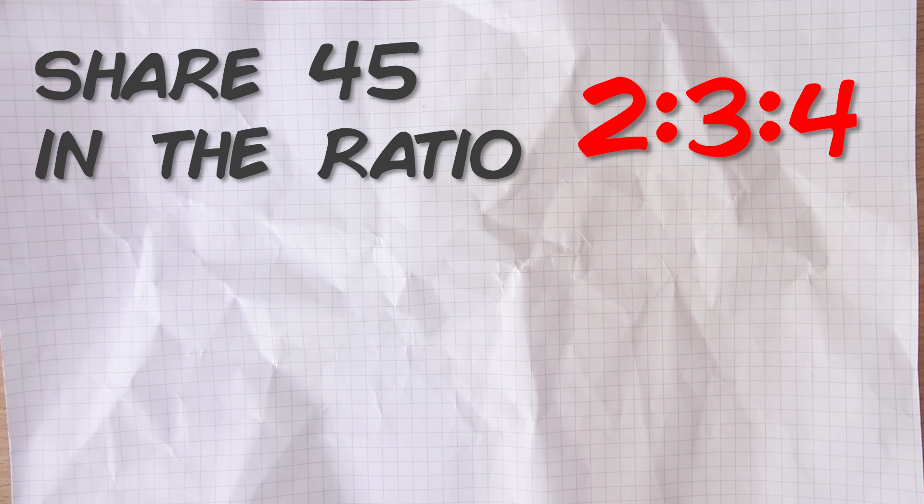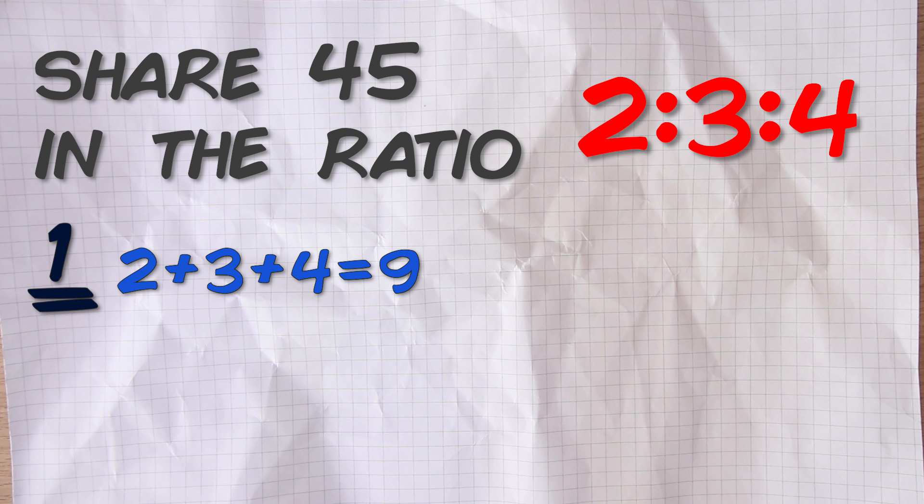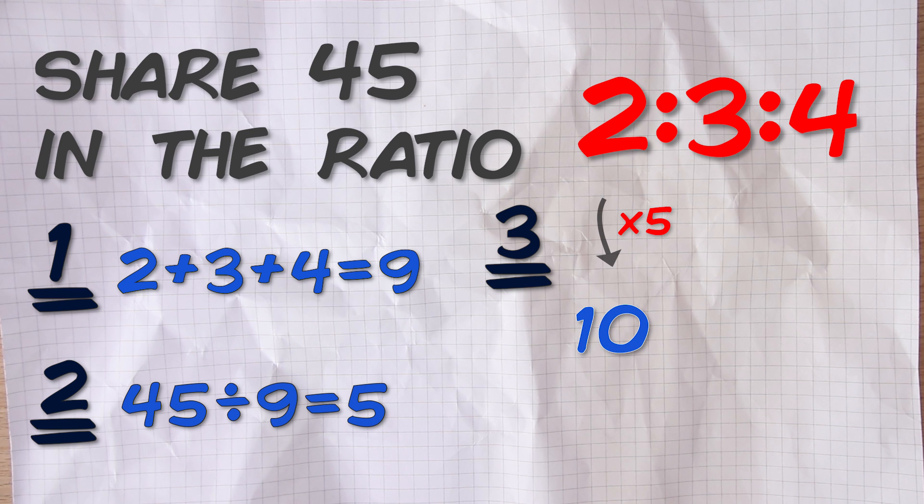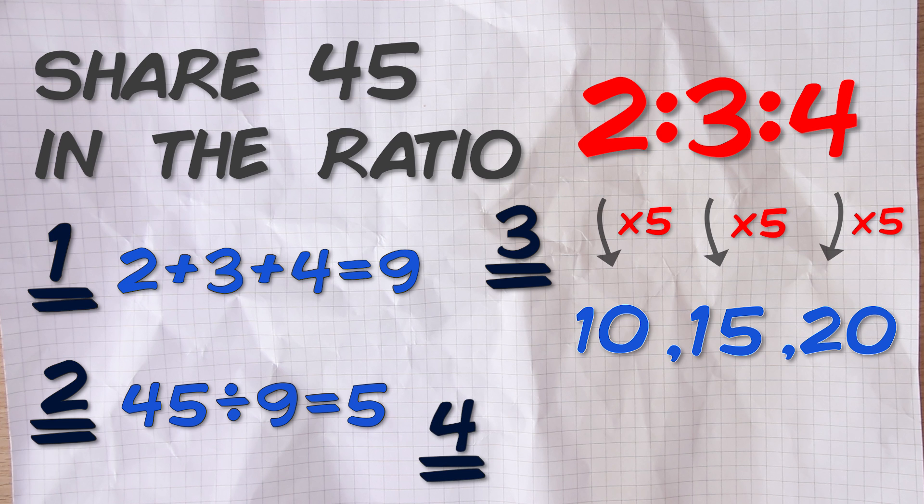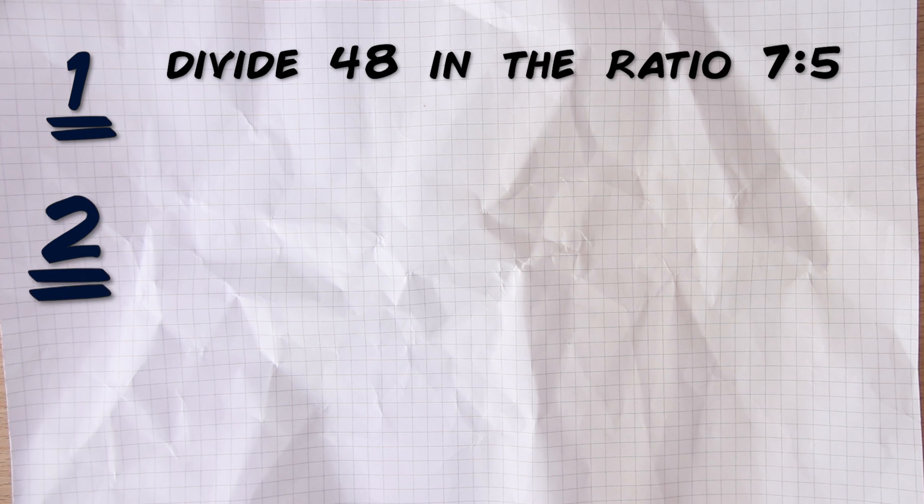Last example: share 45 in the ratio 2 to 3 to 4. We've got three numbers now but it doesn't really matter, we still just go through that exact same process. So first we add the numbers together so 2 add 3 add 4 which is 9. And now we divide 45 by 9 which gives us 5. Then we multiply each of the numbers in our original ratio by 5. So 2 times 5 is 10, 3 times 5 is 15, and 4 times 5 is 20. And again just to check, 10 add 15 add 20 is 45. So that's how you divide a number in a given ratio. Here's a few of those for you to practice. Pause the video and I'll be back in a few seconds.